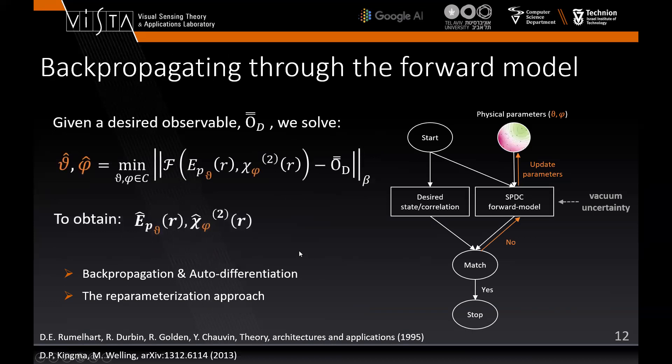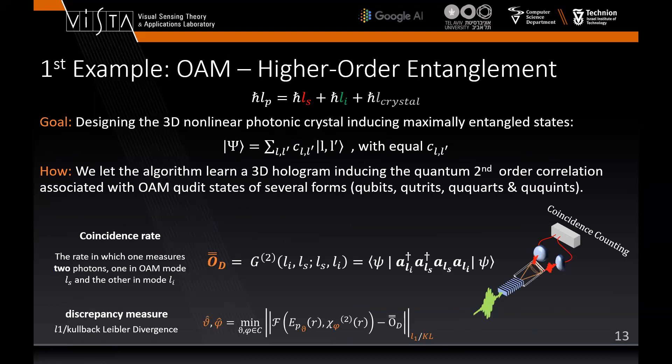The algorithm searches the optimal parameters in a wide parameter space to reduce the discrepancy against the observable via an appropriate loss function. The model is fully differentiable and is optimized using backpropagation and first-order optimization method Adam.